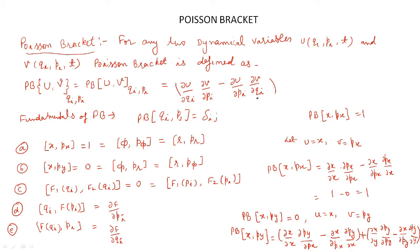There are some fundamental rules in Poisson brackets. The first rule is that the Poisson bracket of the generalized coordinate and generalized momenta — if they are different — will be equal to delta_ij. The property of delta_ij is that if i equals j then delta_ij equals 1, and if i is not equal to j then delta_ij equals 0.